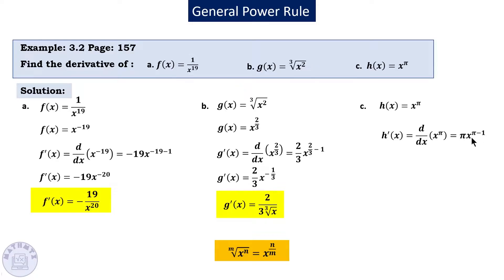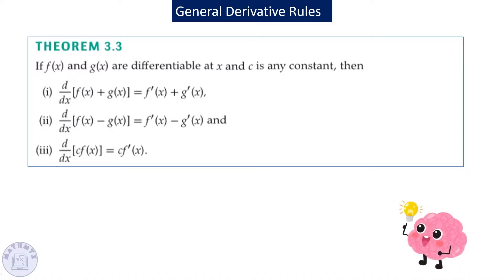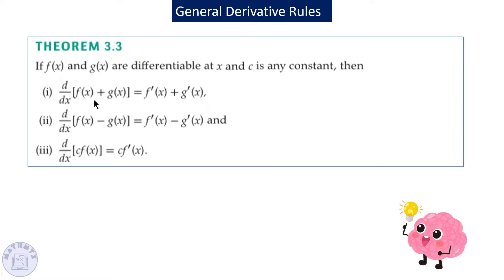For the last example in this set, multiply by pi — pi is an irrational number — giving pi · x to the power pi minus 1. Now, if f and g are differentiable at x and c is a constant, the derivative of a sum is the derivative of the first plus the derivative of the second. The derivative distributes over sums and differences, and constants can be factored outside.